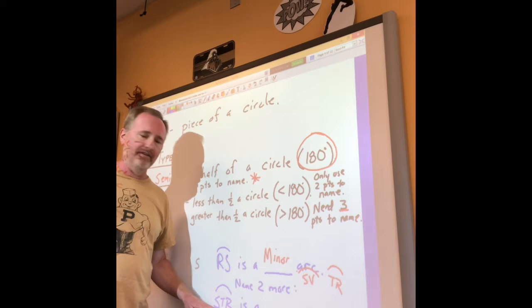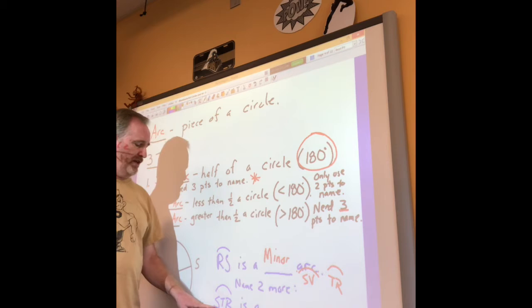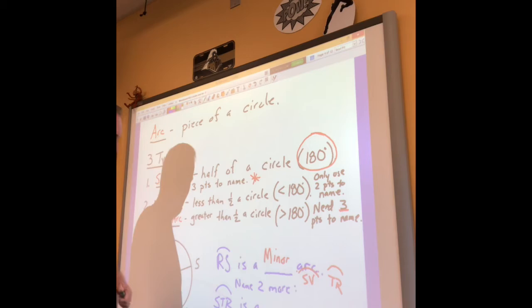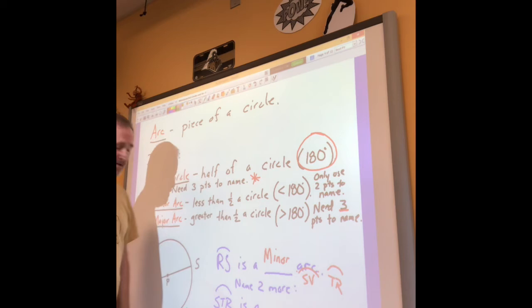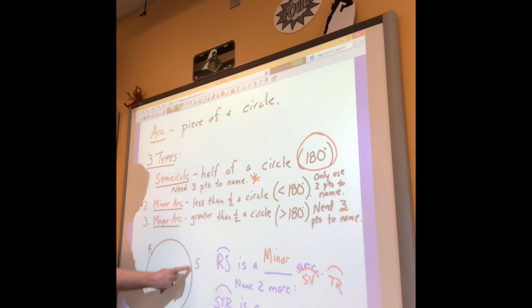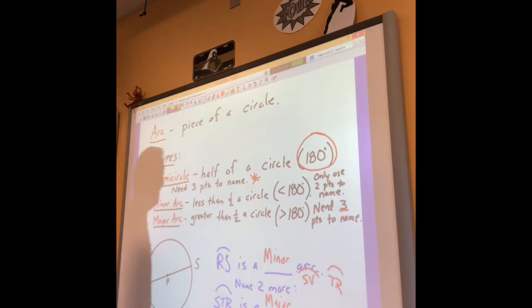Next: STR. That has three letters, so right away that tells you it's either a semicircle or a major arc - it's a fifty-fifty question. Carol says major arc. Let's check: STR - here's S, and going S to T to R... yes, that is more than halfway around the circle. S to T would be halfway, but STR goes further. So STR is definitely a major arc. Good job, Carol.